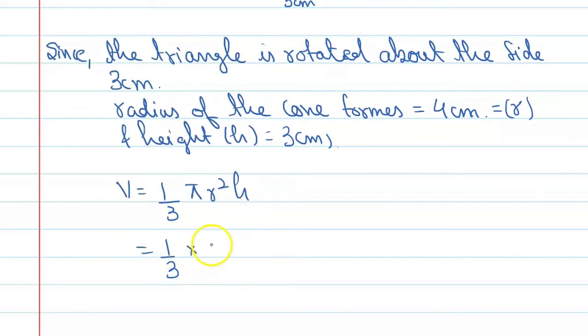This is pi, r means 4 raised to power 2 into 3. So here we will get 3 and 3 will get cancelled, so we will get 16 pi. So now we can get the final answer.